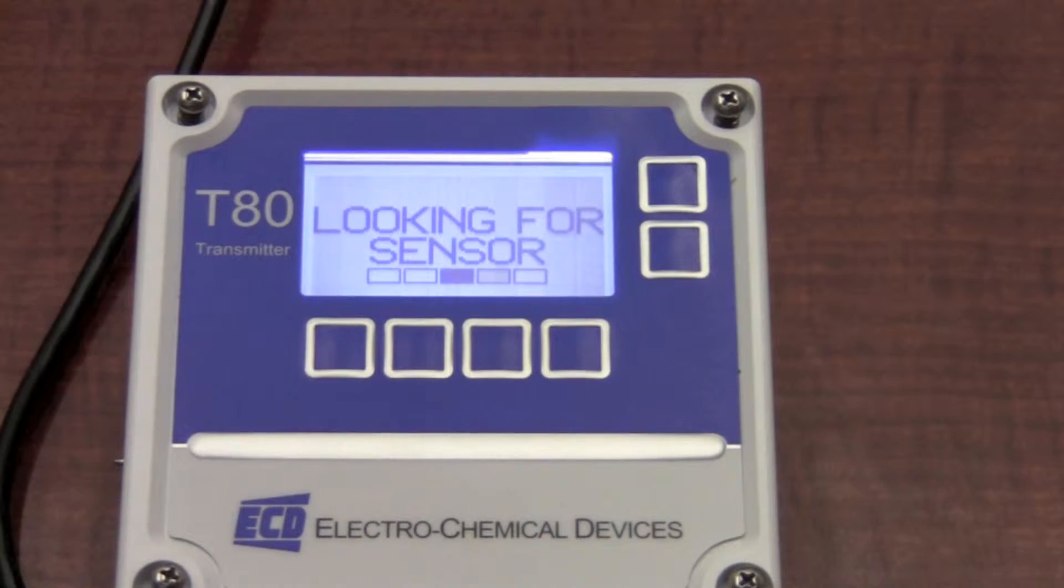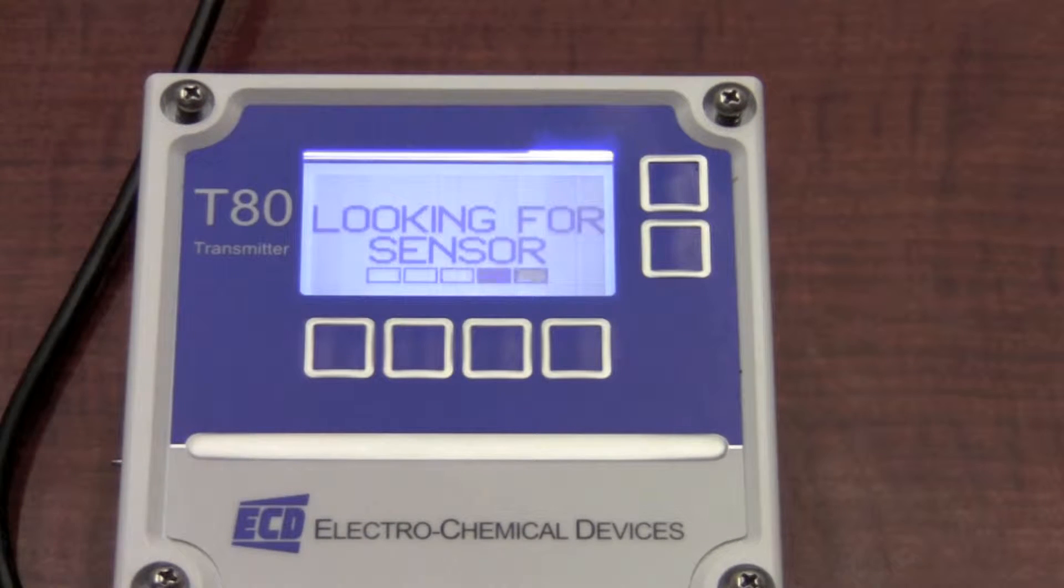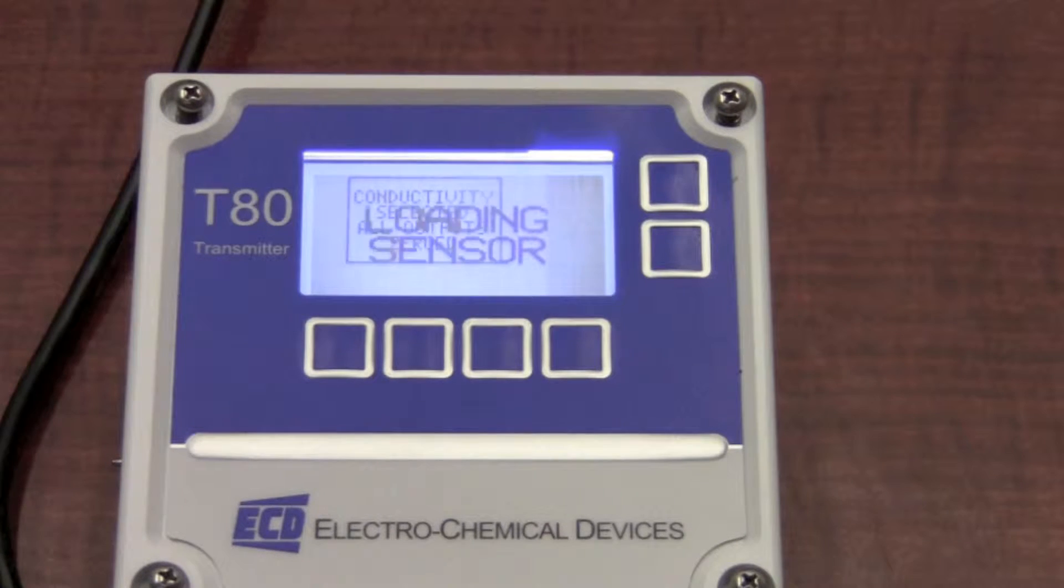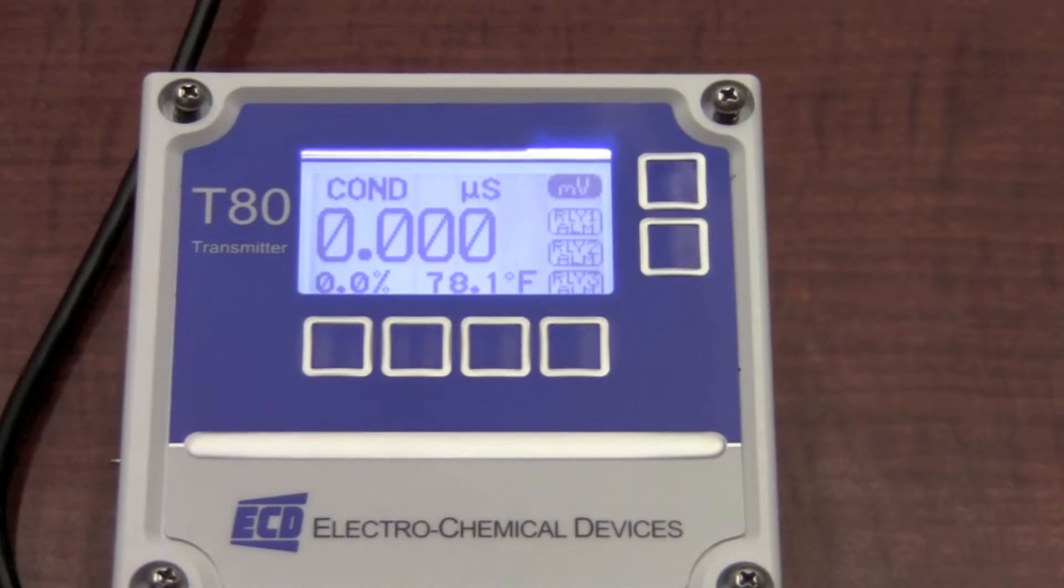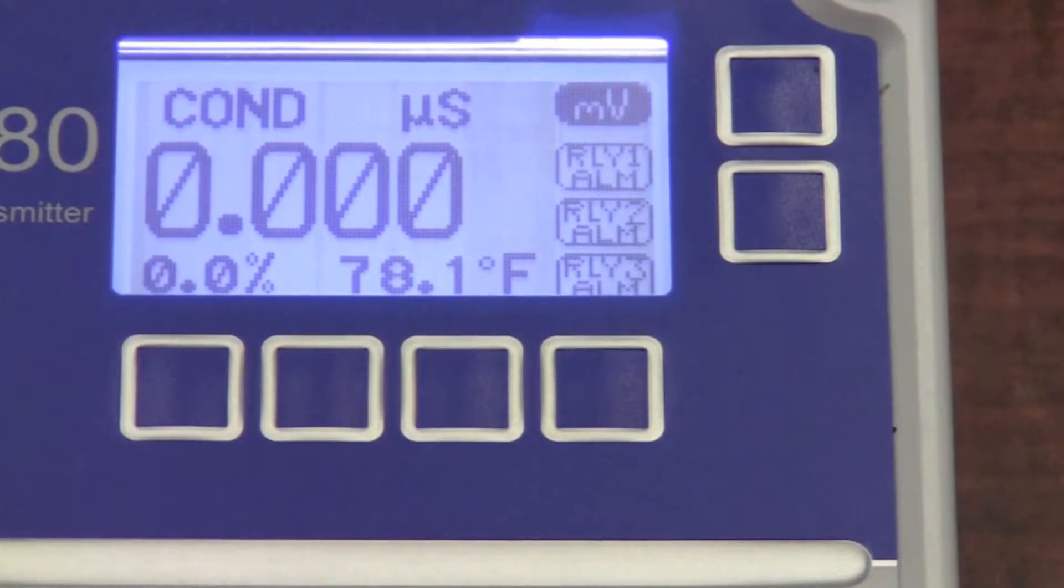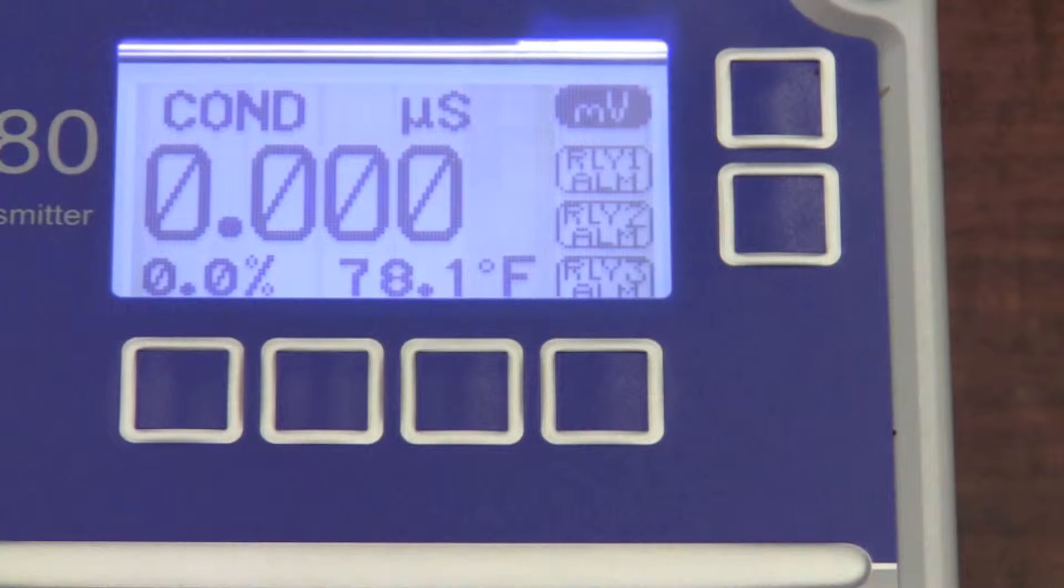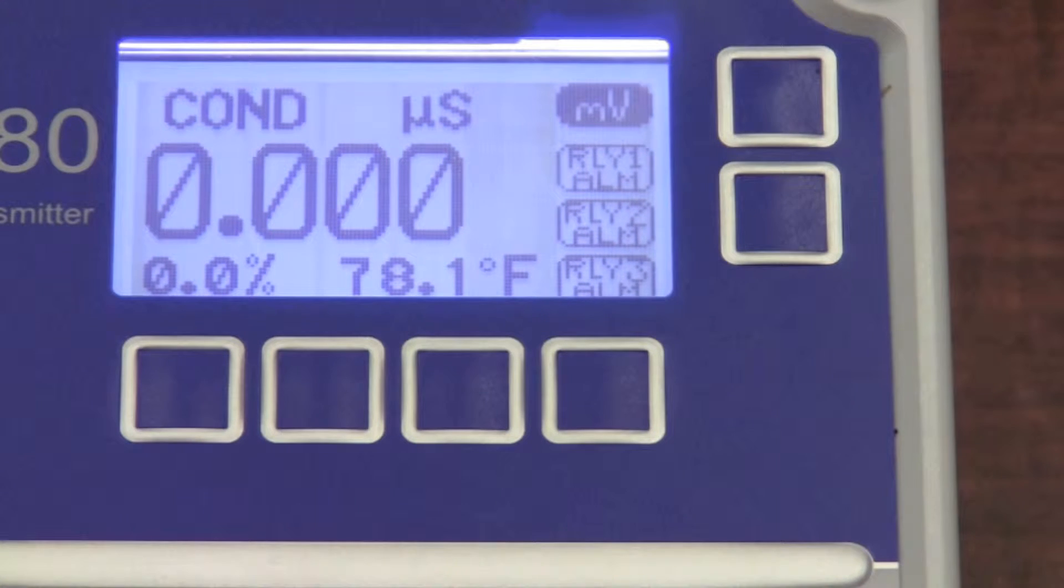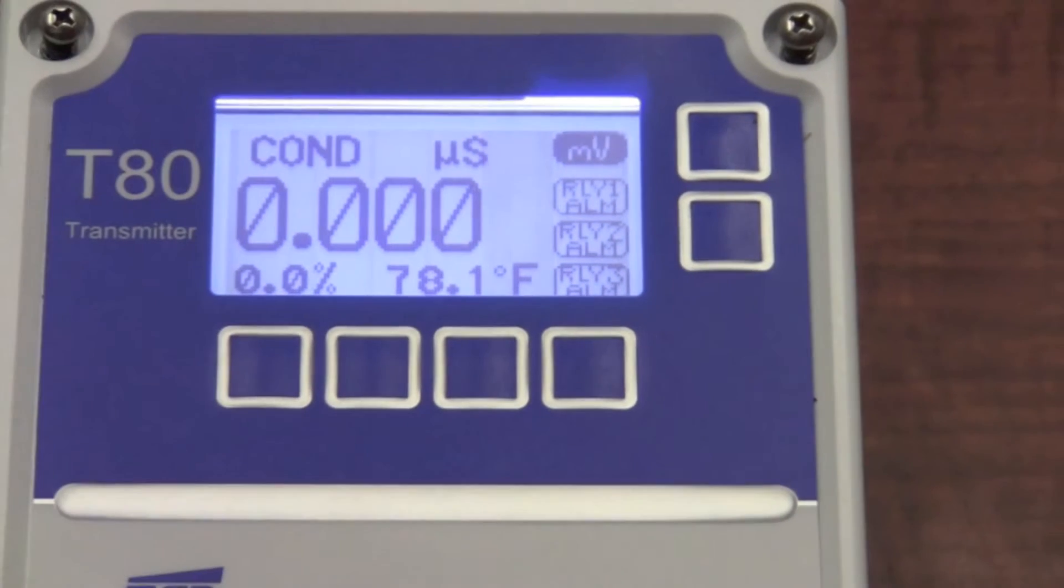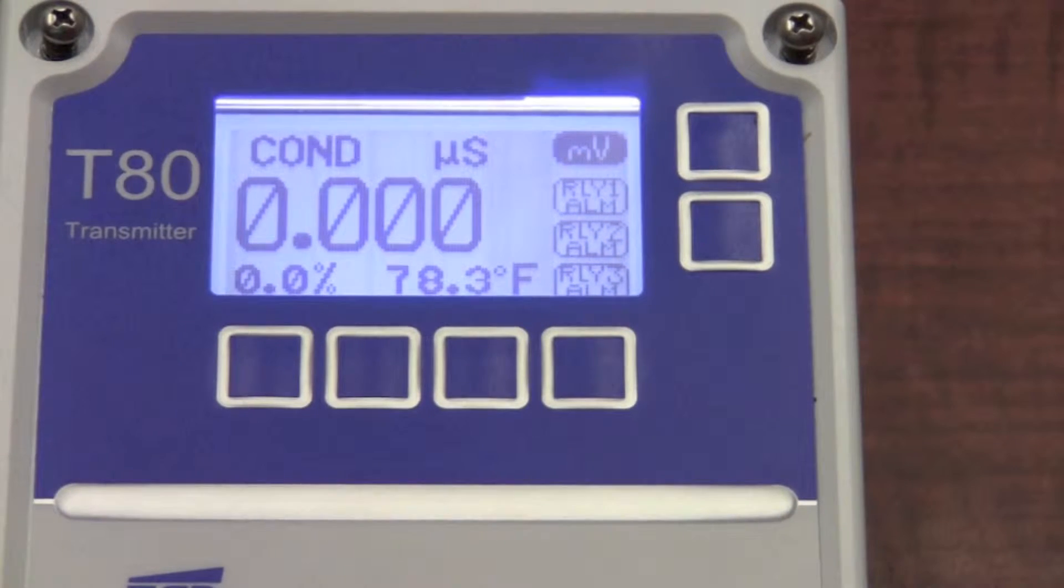Upon power up of the T80 intelligent transmitter, it's looking for a sensor. Once a sensor is connected, it interrogates the sensor for the type and span of measurement. I've just connected a conductivity sensor, and you see on the display, I show the type of measurement conductivity. I show it in microsiemens. I show the percentage of output and the temperature. On the right hand side, I show status of the internal relays.